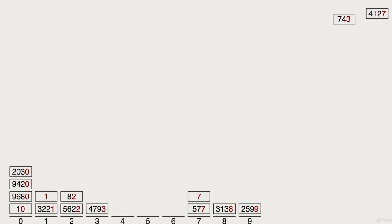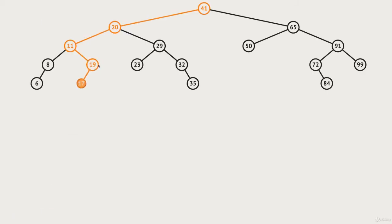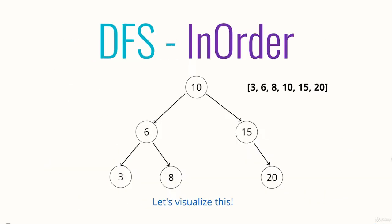Then we implement over 10 data structures from scratch, including stacks and queues, singly and doubly linked lists, binary search trees, heaps, priority queues, hash tables, and even graphs.